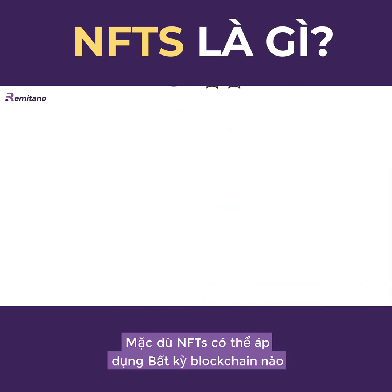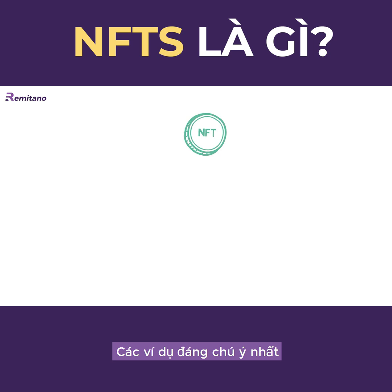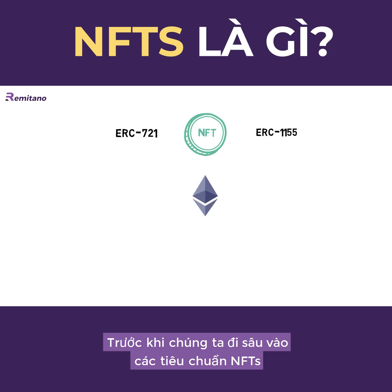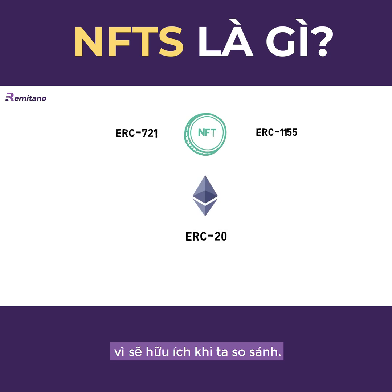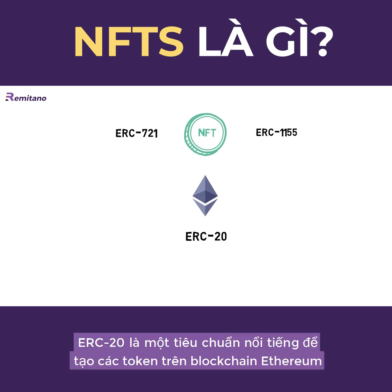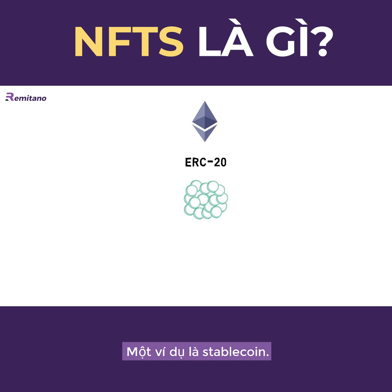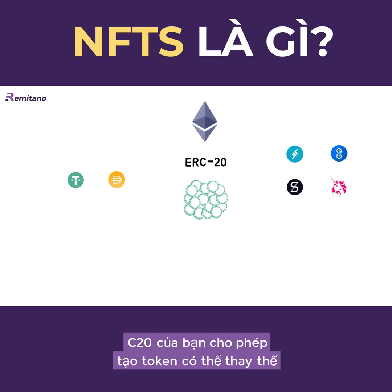Although NFTs can be implemented on any blockchain that supports smart contract programming, the most noticeable examples are ERC721 and ERC1155 standards on Ethereum. Before we get into the NFT standards, let's quickly recap what ERC20 is, as it will be useful for comparison. ERC20 is a well-known standard for creating tokens on the Ethereum blockchain. Some examples are stablecoins such as USDT or DAI, or DeFi tokens such as LAND, WIFI, SNX and UNI. ERC20 allows for creating fungible tokens.